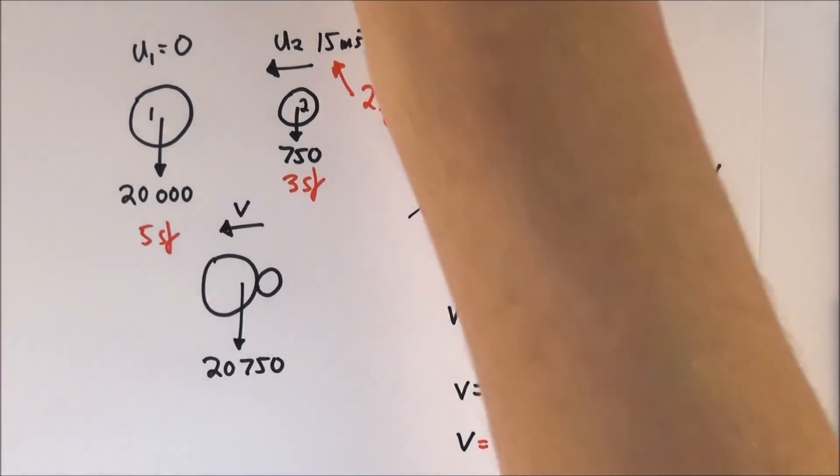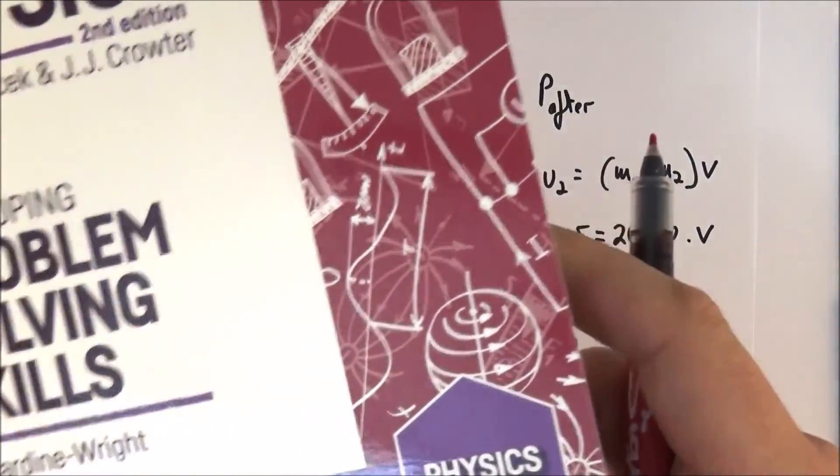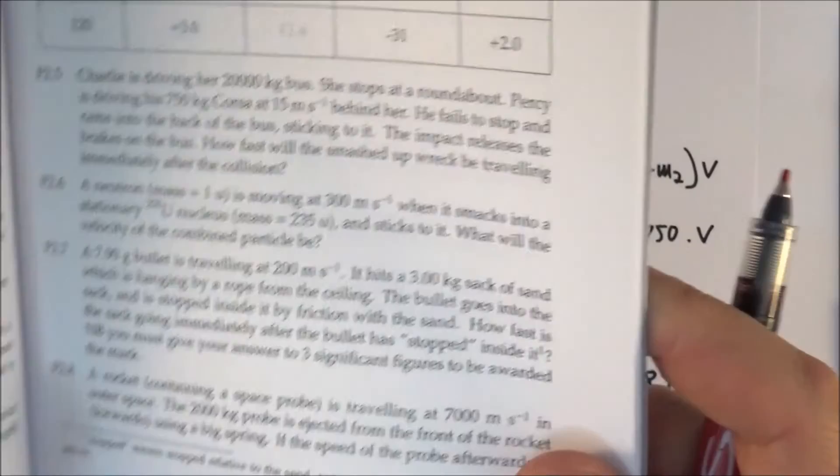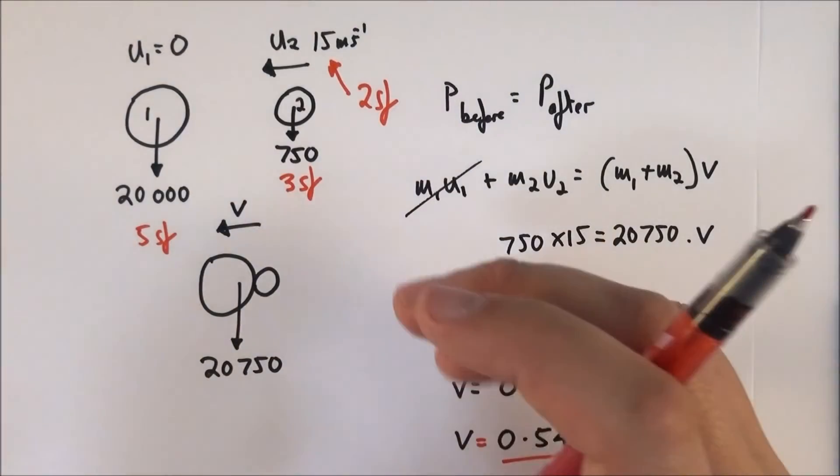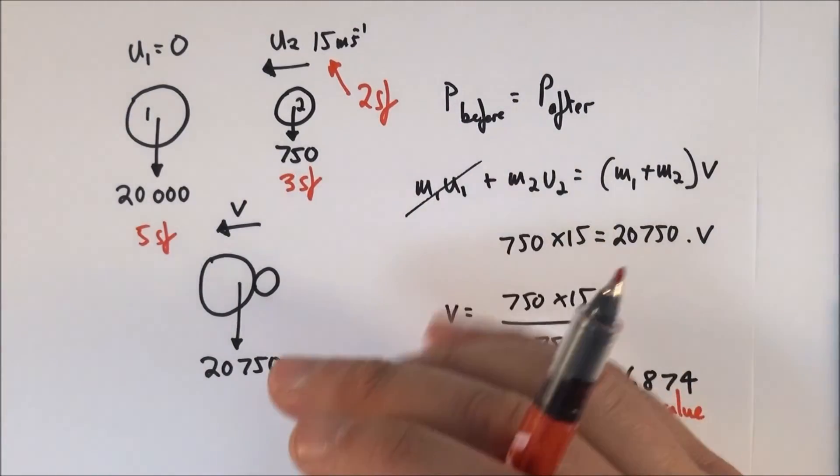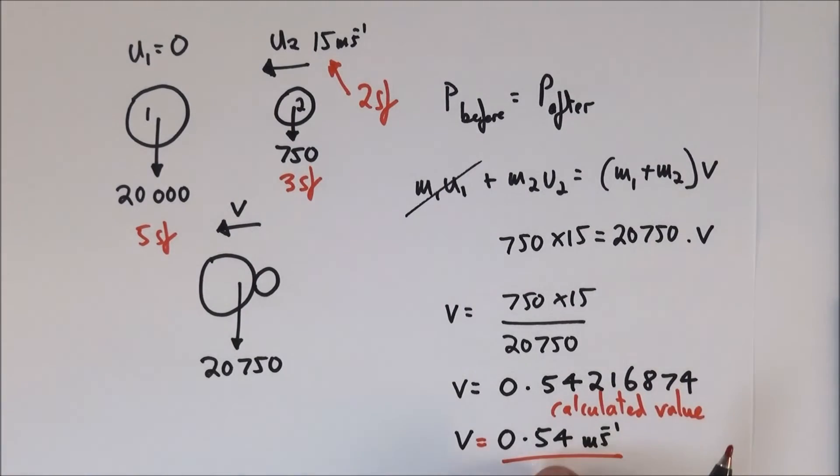So when you're doing Isaac Physics, and I know that a lot of you are doing this now, you have to put the answer to the appropriate amount of significant figures. But it makes sense to do this. Every time you answer a question, every time you do an exam, if you give your answer to an appropriate number of significant figures it makes you look like you know what you're doing.